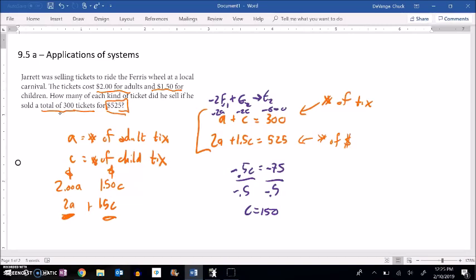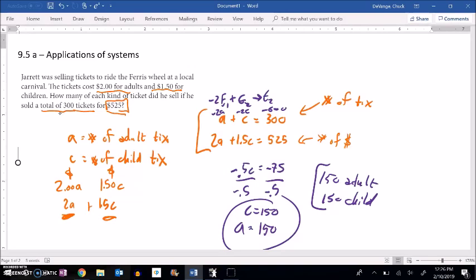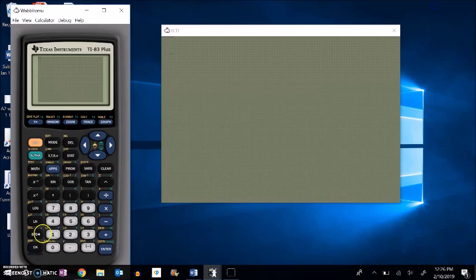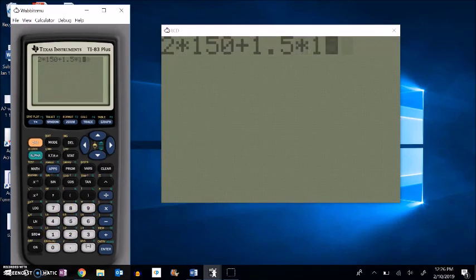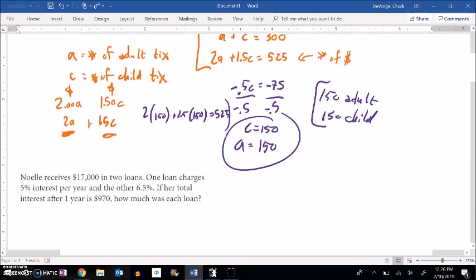So that means we would have sold 150 child tickets. We can plug that back in. And it looks like the number of adult tickets would also be 150. So 150 adult tickets, 150 child tickets. And that just happened to be that those were the same. Let me check it here. So if I plug these in, 2 times 150 plus 1.5 times 150 should equal 525. So that worked. Great. So there's that first problem.